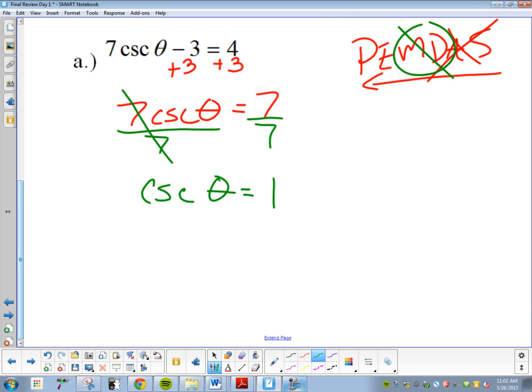We got to get theta by itself. I don't like cosecant, though. Cosecant is ugly. What is cosecant related to? Sine. So, what I'm going to do is I'm going to change cosecant to sine. How are cosecant and sine related? They're reciprocals of each other. Sine and cosecant are reciprocals of each other. So, if I made cosecant sine, what do I need to do with the number 1? What's the reciprocal of 1? It's still 1.